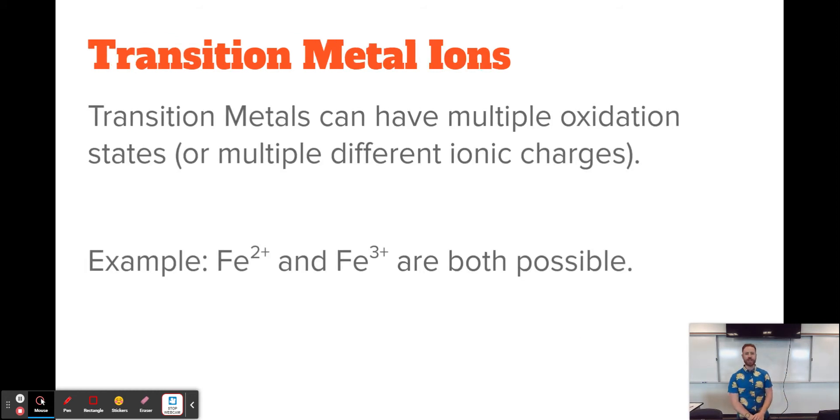So those transition metals, those elements in the middle of the periodic table, what makes them weird and the reason that we often skip over them is because they can have multiple oxidation states. Or they can have different ionic charges just depending on the situation that they find themselves in. For example, iron can be either a plus 2 ion or a plus 3 ion. It just depends on the situation.